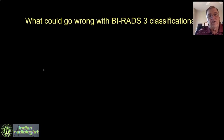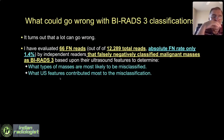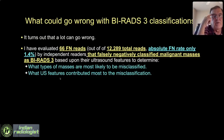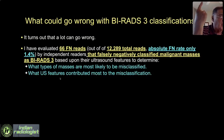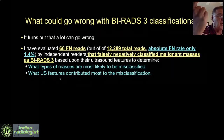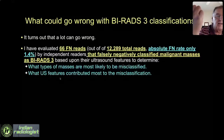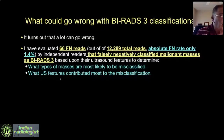What did I find went wrong with these BIRADS-3 classifications? How did the readers do overall? There were 66 false negative reads out of 12,289 total reads. That's a pretty good false negative rate — less than 2%. So the readers overall did achieve the ACR BIRADS false negative rate of less than or equal to 2% for BIRADS-3. But that doesn't mean we can't learn something from the false negatives they had.